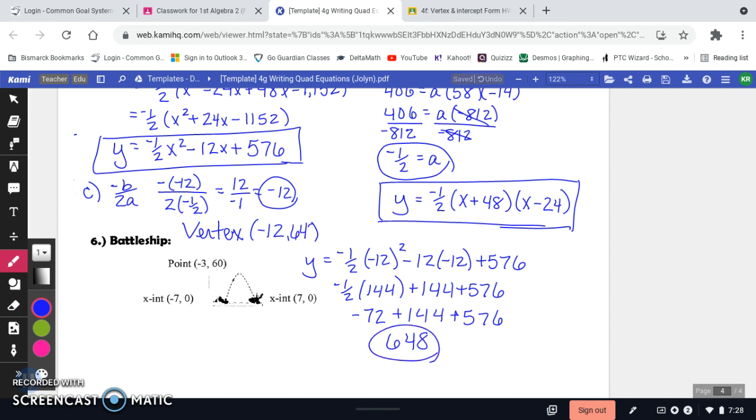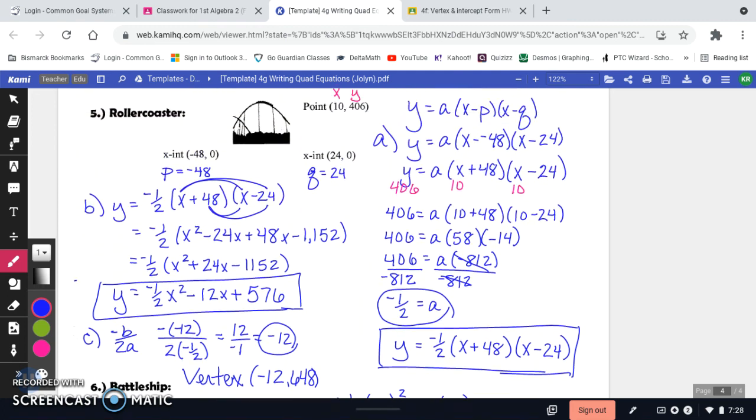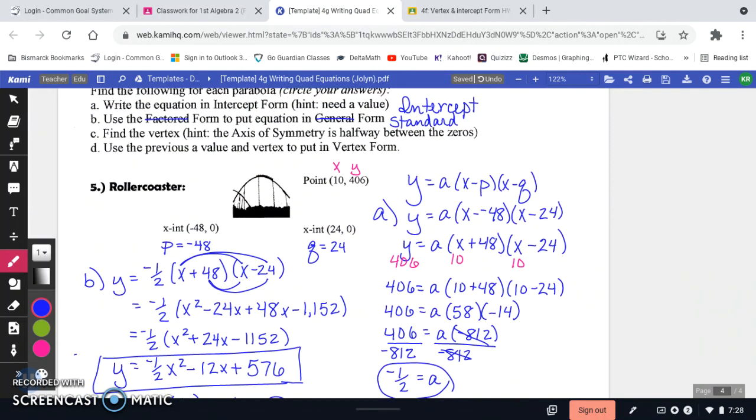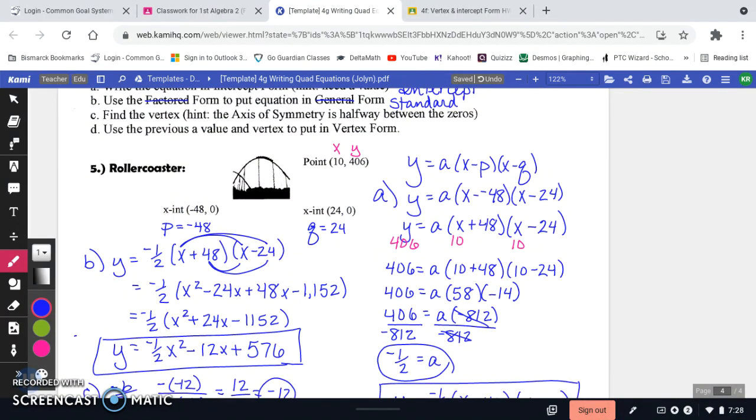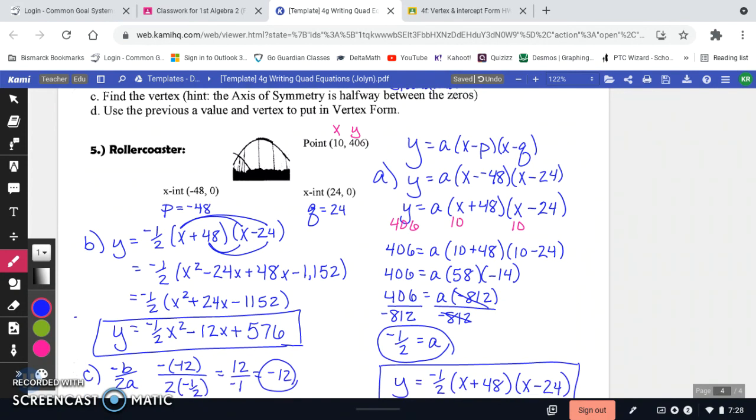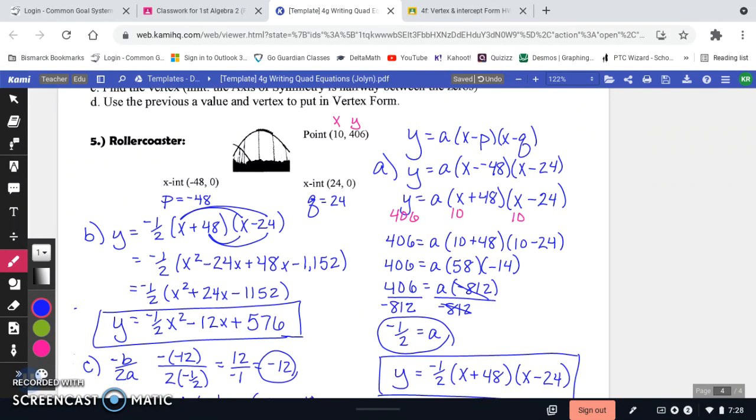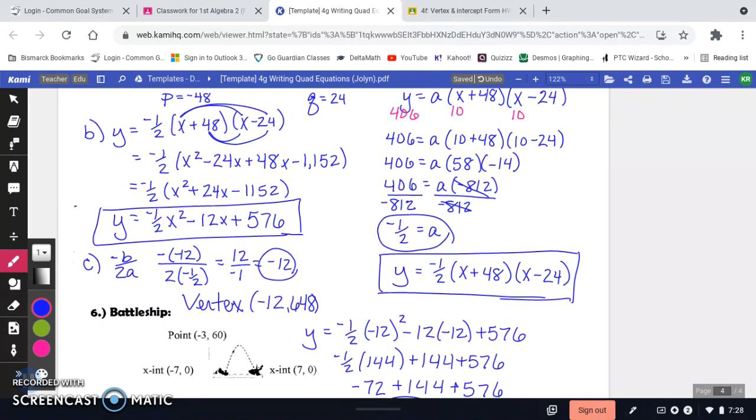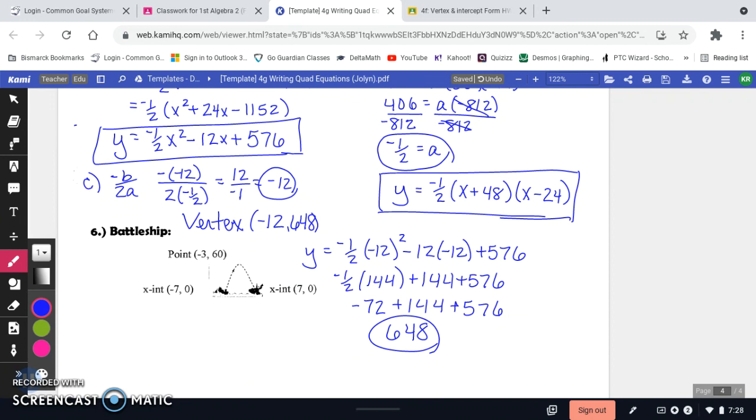So there's your Y value, 648. And then that is part C, find the vertex. So we did that. And then use the previous A value and vertex to put into vertex form. So we're going to have all three equations for this example.